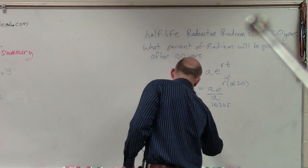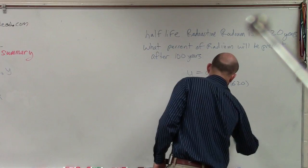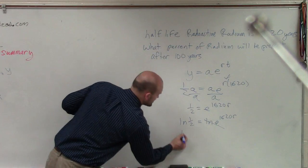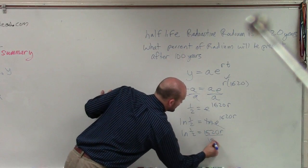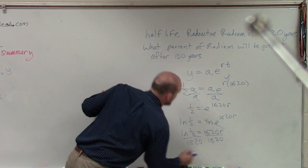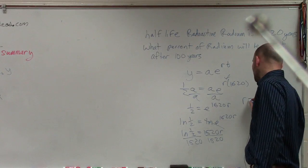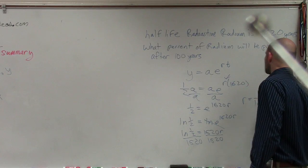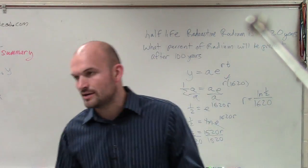So I say ln of 1/2 equals ln of e. Therefore, that goes to that. So I say ln of 1/2 equals 1,620 r divided by 1,620. So therefore, we can say the rate that this radium decreases is equal to ln of 1/2 divided by 1,620. Does everybody understand that or have questions on where I got to this point?